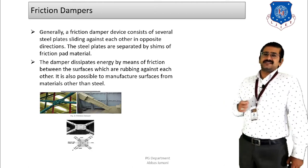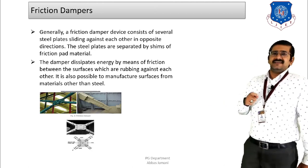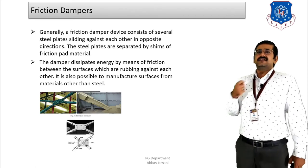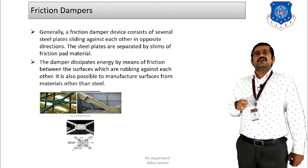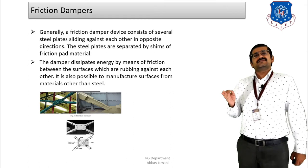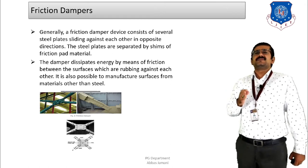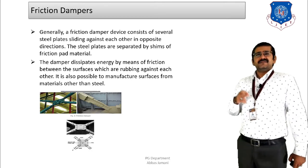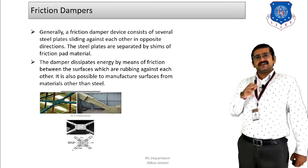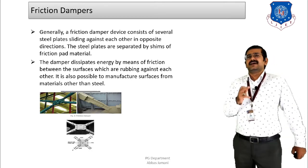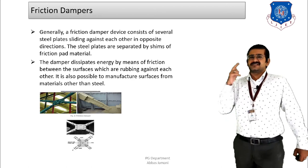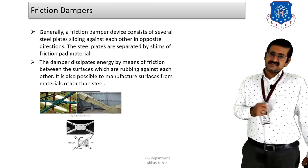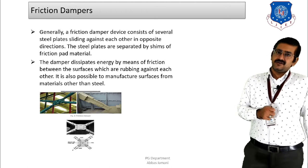The ideal location for a friction damper is within the bracing of a steel structure subjected to wind forces. Installing friction dampers within the braced frame reduces the forces transferred to the building significantly, enhancing the overall performance of the steel structure.